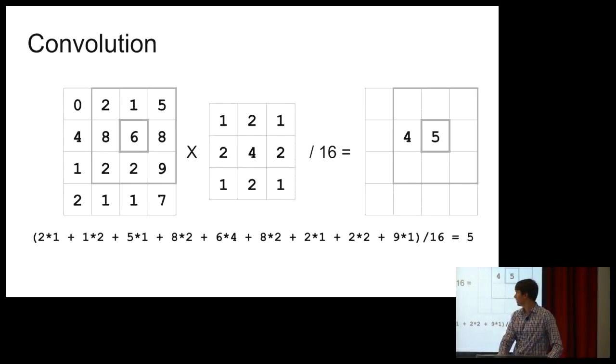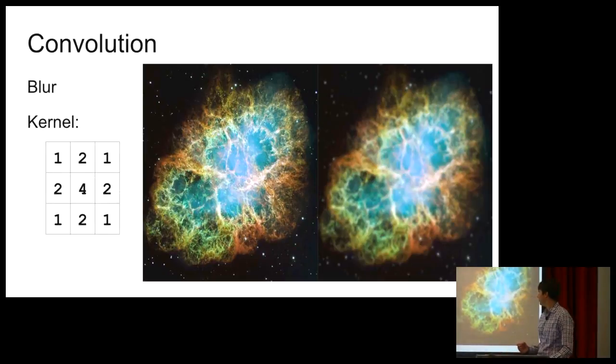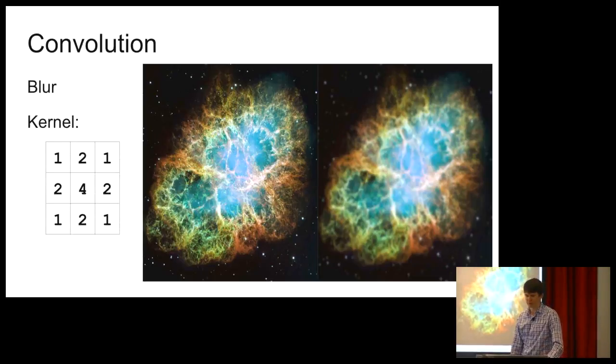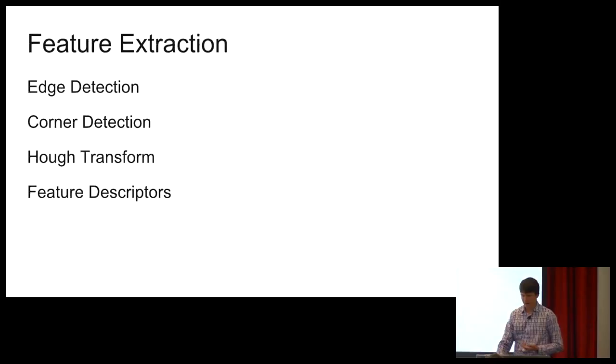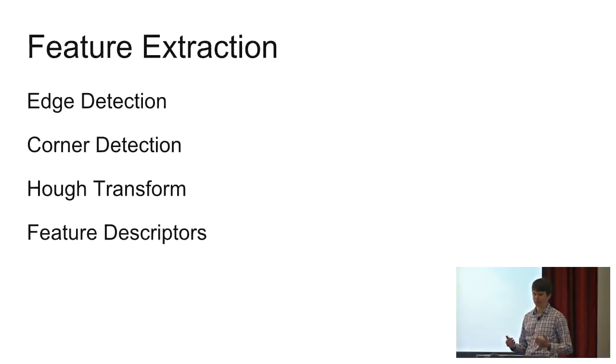What particular values you pick for your kernel is going to change what the operation does. This particular kernel has the effect of blurring an image. This is the cat eye nebula. On the left is the final product that's been released by NASA. And applying that kernel gets you this. So that's nice, we can blur images, but why would you ever want to do that? It seems like you're kind of throwing away information. Well, one useful property that blurring has is it reduces noise. You can see there's a lot of stars in the background on the left, not so much on the right. So that's going to be useful for feature extraction.